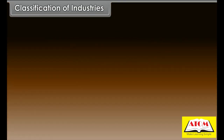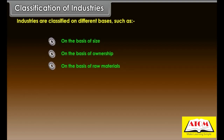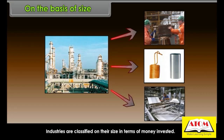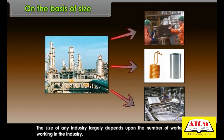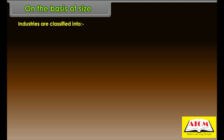Industries are classified on different bases: on the basis of size, ownership, and raw materials. Industries are classified on their size in terms of money invested, which largely depends upon the number of workers, the raw materials used, and the nature of goods produced. On the basis of size, industries are classified into small-scale industries, cottage industries, and large-scale industries.